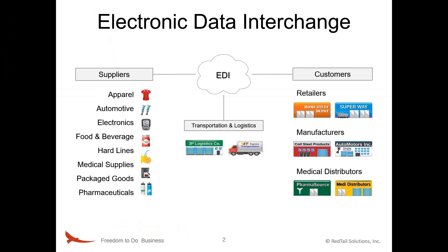EDI — Electronic Data Interchange — is used in many industries to automate commerce. This includes both buying and selling, as well as transfer of documents in things like medical and insurance businesses. Today we're using only examples of goods being sold by a supplier to customers. Implementing trading relationships is similar across any industry, but documents and fields can differ. Grocery purchase orders are completely different EDI documents from those used for other items. Lot tracking and serialization may be critical for some businesses and not important at all to others. It's helpful for the person doing the implementation to be familiar with the industry requirements.